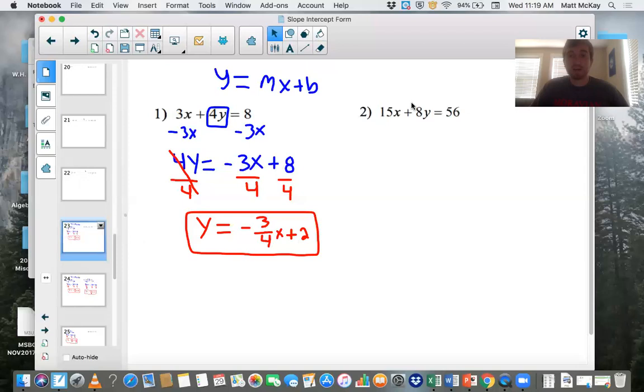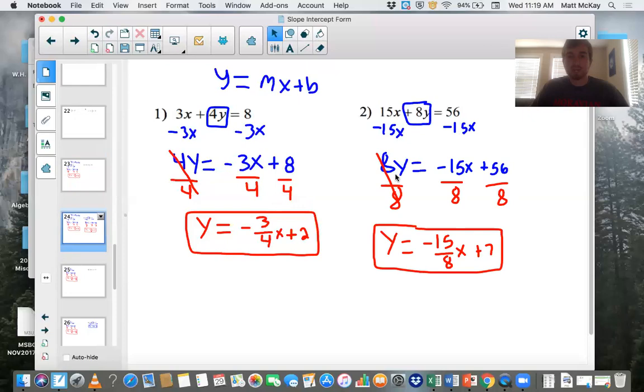Second one, let's try this one. Again, you're going to box in the eight y, get rid of anything next to it, and then follow the same procedure that you just did for number one. So number two, we box it in. We subtract 15x on both sides. We get this right here in blue. Make sure, again, we put the negative 15x first, then plus 56. Do not put 56 minus 15x, although they're equivalent. We want it to be in this form.